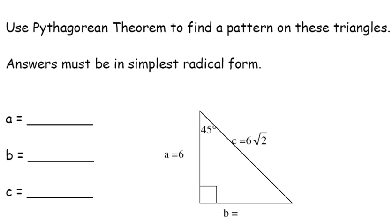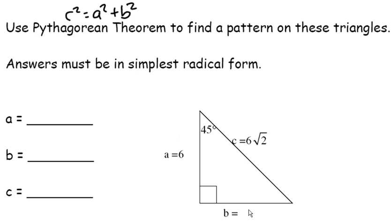Welcome to Notes 7.4. Last time in the notes, we talked about the Pythagorean Theorem, which you will remember is C squared equals A squared plus B squared. And today we're going to talk about special right triangles. We're going to use the Pythagorean Theorem to see if you can figure out what I'm talking about when I talk about special right triangles. So take this triangle here, and I want you to find the missing side.